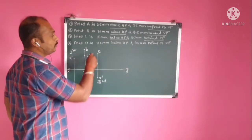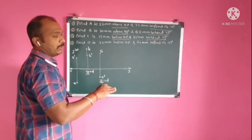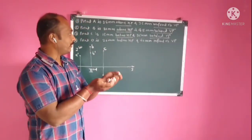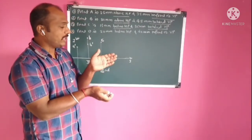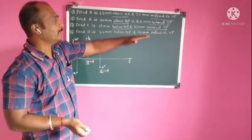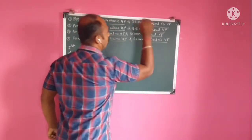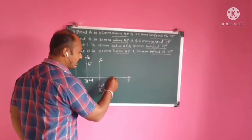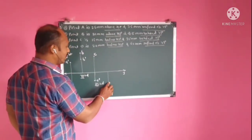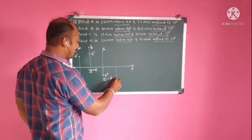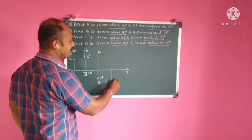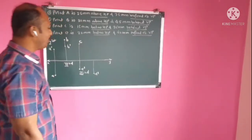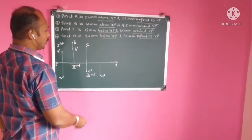The last point is point D. Point D is 20 mm below HP and 40 mm in front of VP. This means the point lies in the fourth quadrant. Since the point is below HP, its front view will be below XY line. Plot D dash at 20 mm below XY line — that is the front view of point D. Since it is 40 mm in front of VP, its top view will also be below XY line.